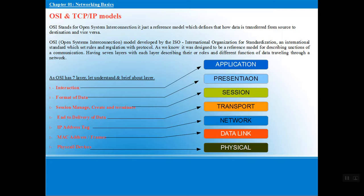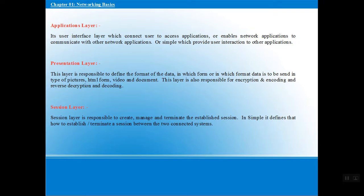Finally, we have the Physical layer, which plays a big role because it involves the actual hardware devices — cables, Ethernet, hubs, and buses. So from top to bottom, the seven layers of the OSI model are: Application, Presentation, Session, Transport, Network, Data Link, and Physical.